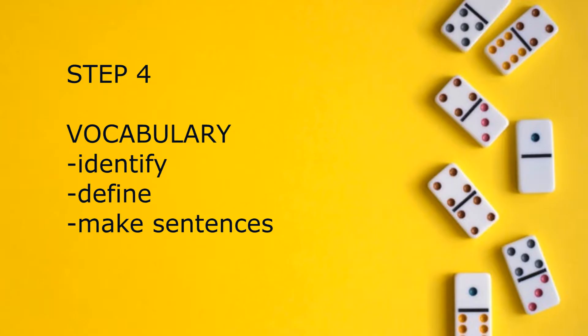Step four is vocabulary. This is the longest step. First, we have to identify — we pick the words that are useful for the student. Then we define the word. The teacher can define the word or the student can. After defining the word, we make sentences with the vocabulary word. The teacher gives out a sample sentence and then the student. As a teacher, make sure the student gives out a correct sentence. If corrections are needed, go ahead and correct it.